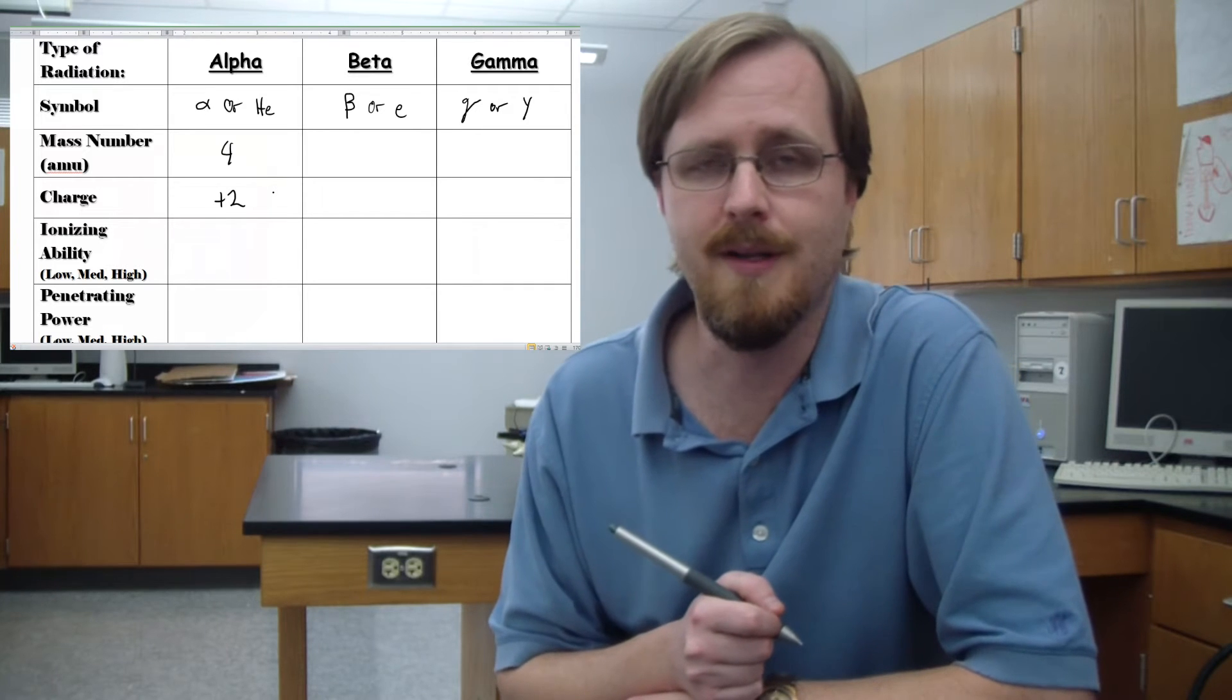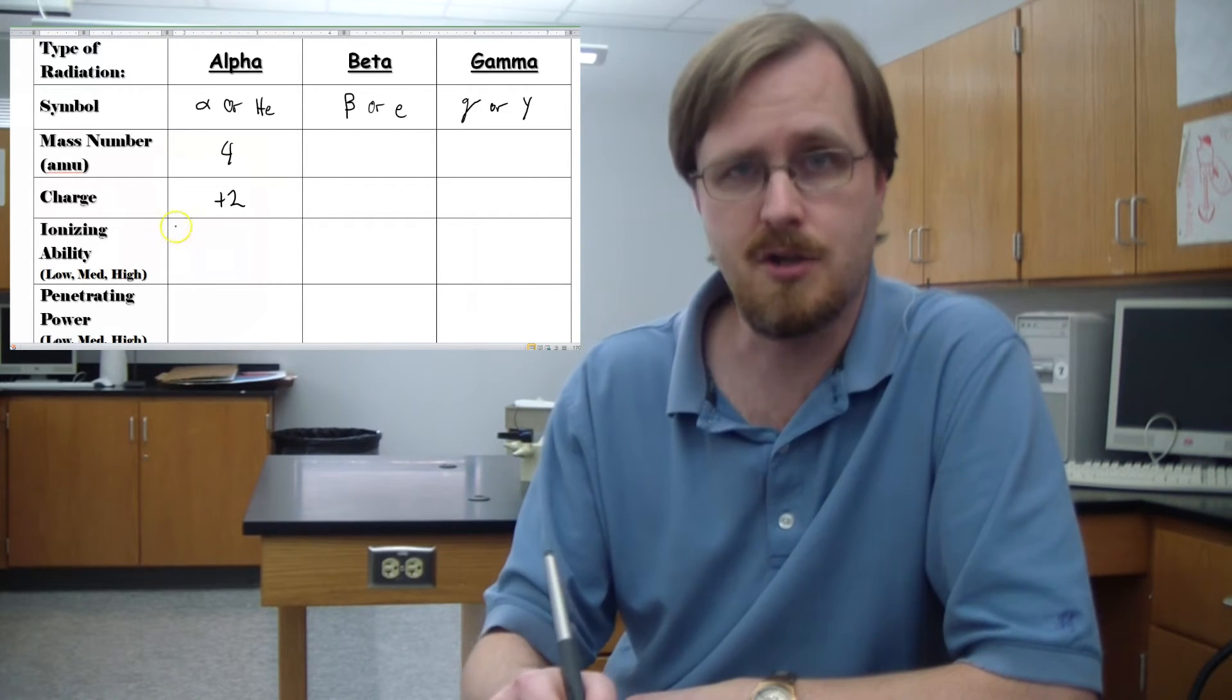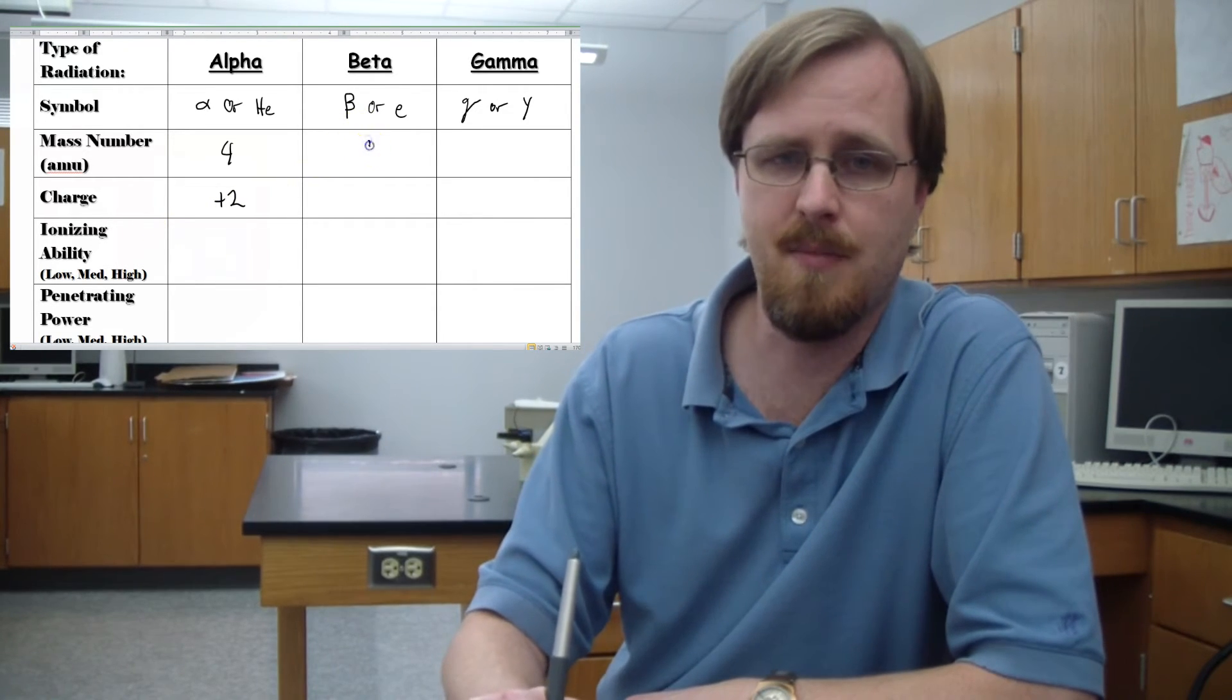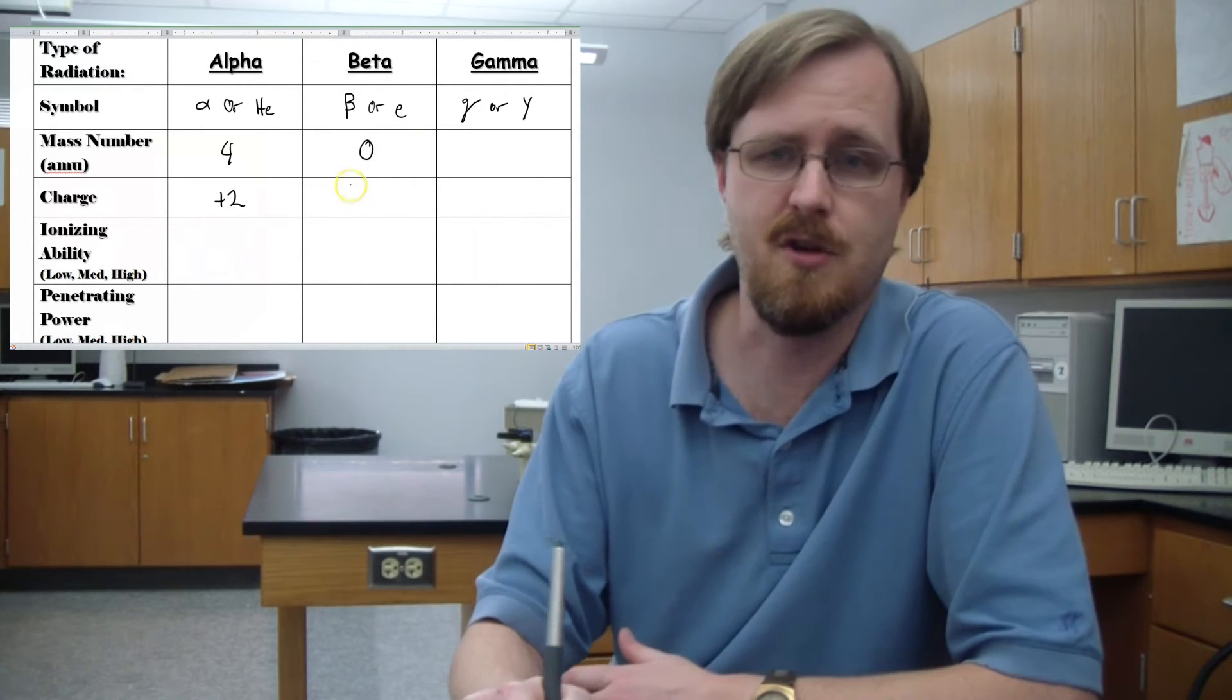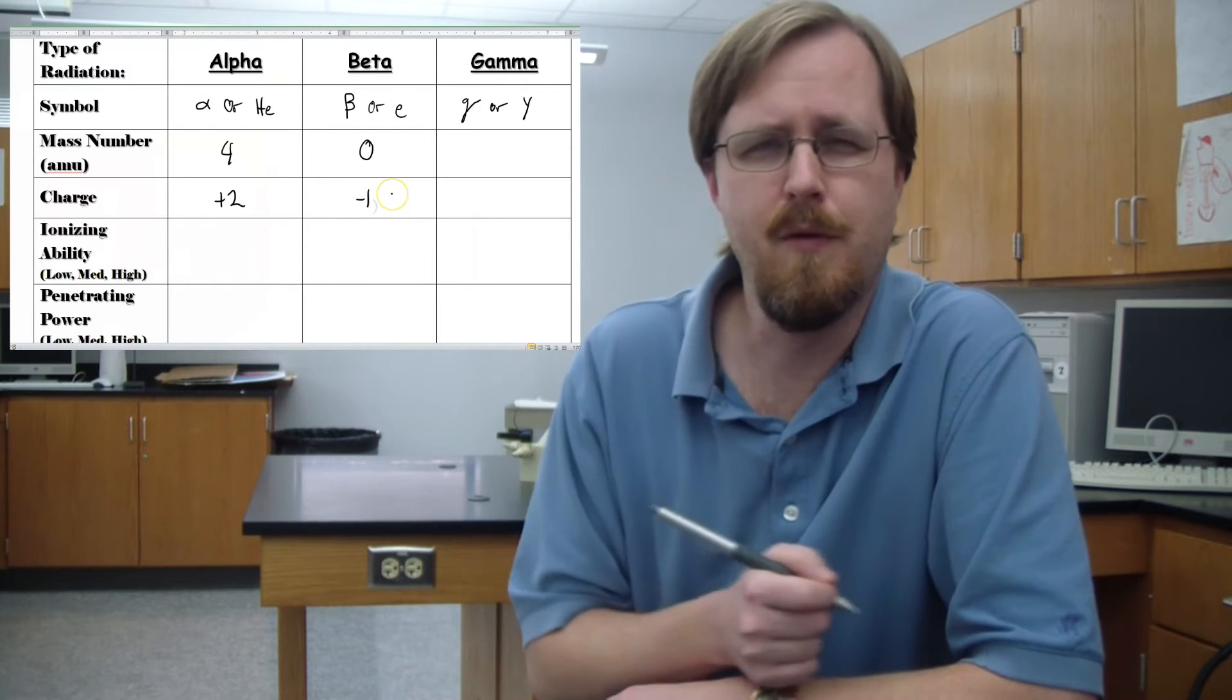The beta particle is an electron. So it has a mass of zero relative mass as compared to the proton and neutron. And then its charge is negative one.